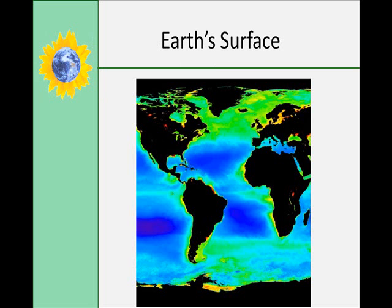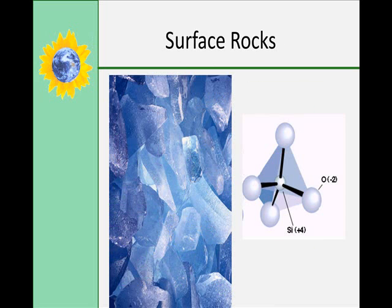The surface of the Earth is 71% ocean and 29% continents. The surface rocks on the continents are primarily silicates, which are made out of silicon and four oxygens in a tetrahedral shape that you can see right here. They go into almost all of the rock forming minerals.